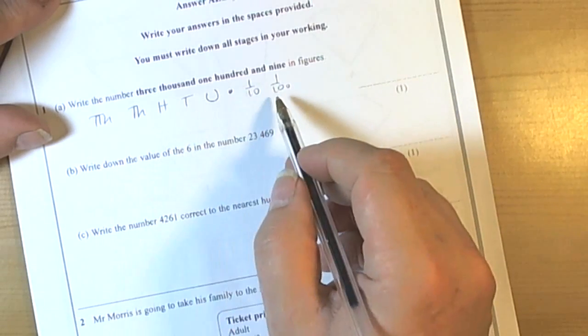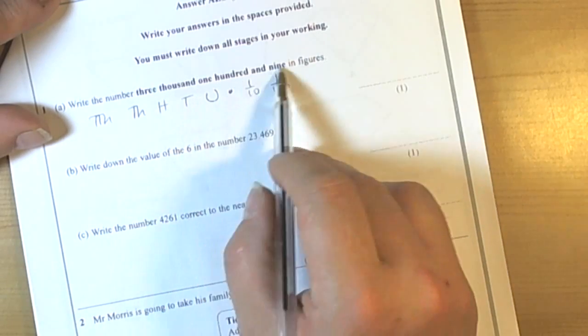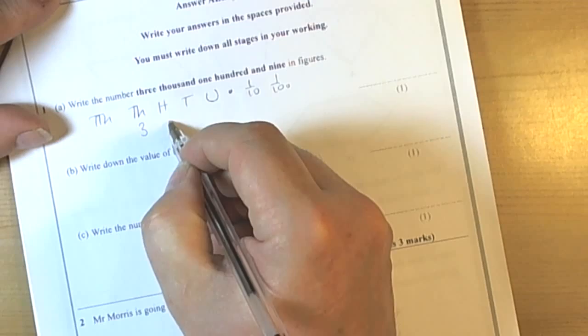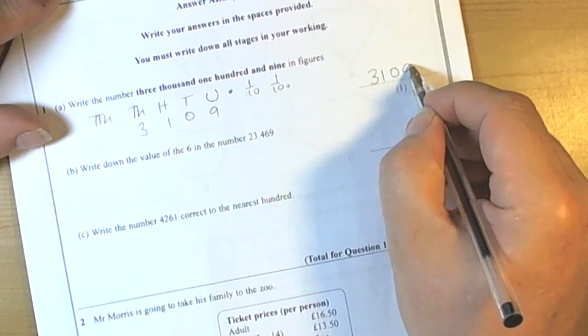So we really need to know our place values for numbers and how we think of them. So we're asked for 3109. So we've got 3100, no tens and 9. So 3109.